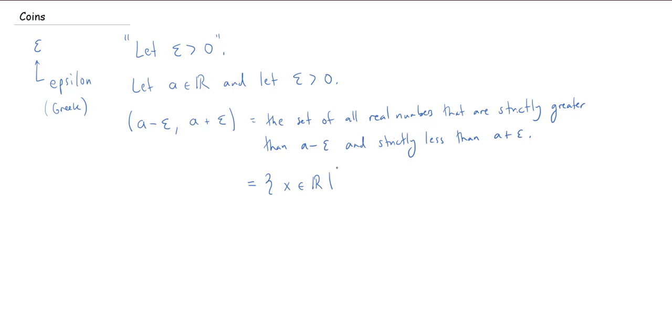So remember, in set builder notation, what comes before this vertical bar is the form of an element. What does it look like? Well, it's a real number. That's not very interesting, but okay, it is. Then this bar means such that.